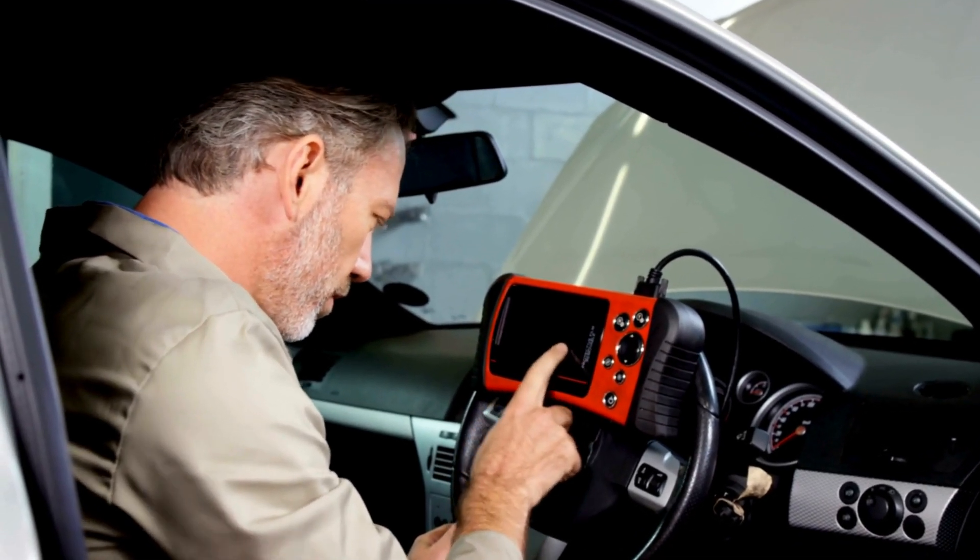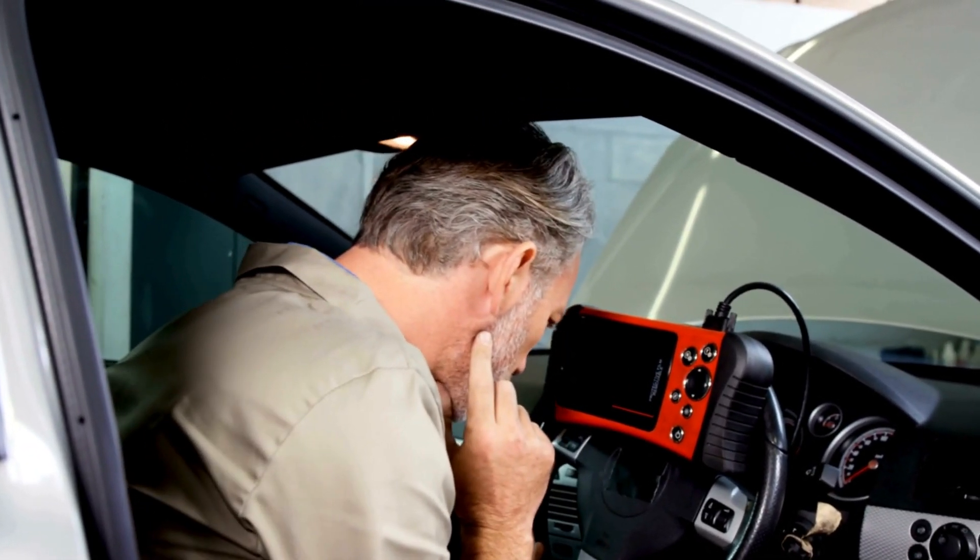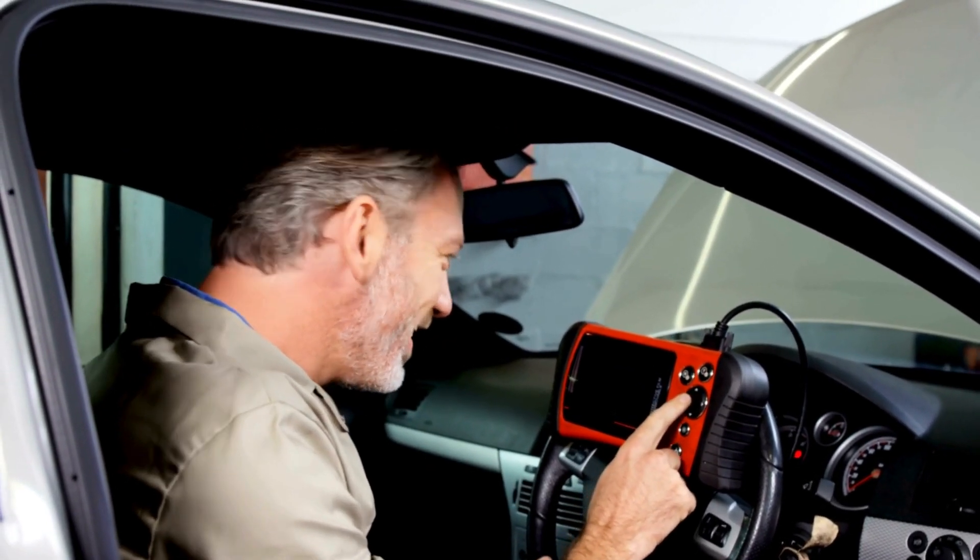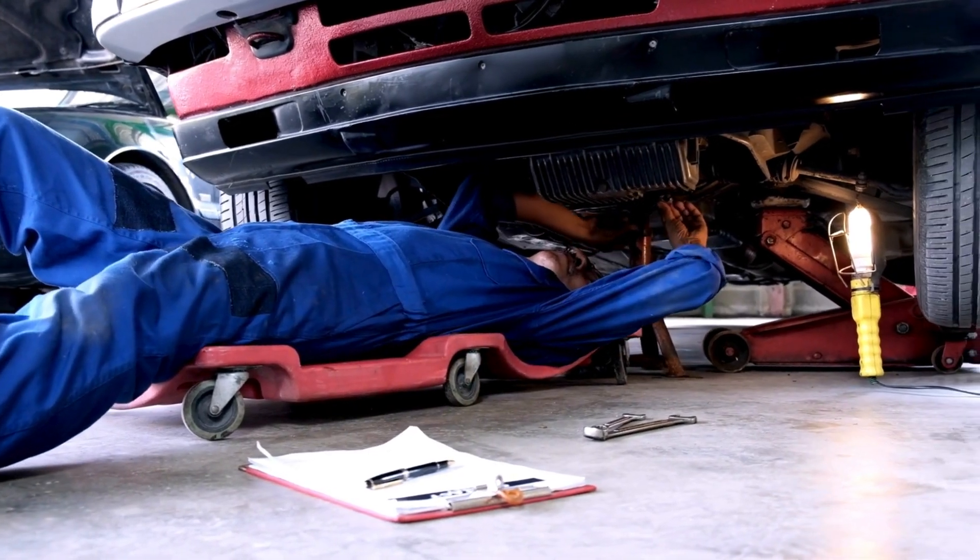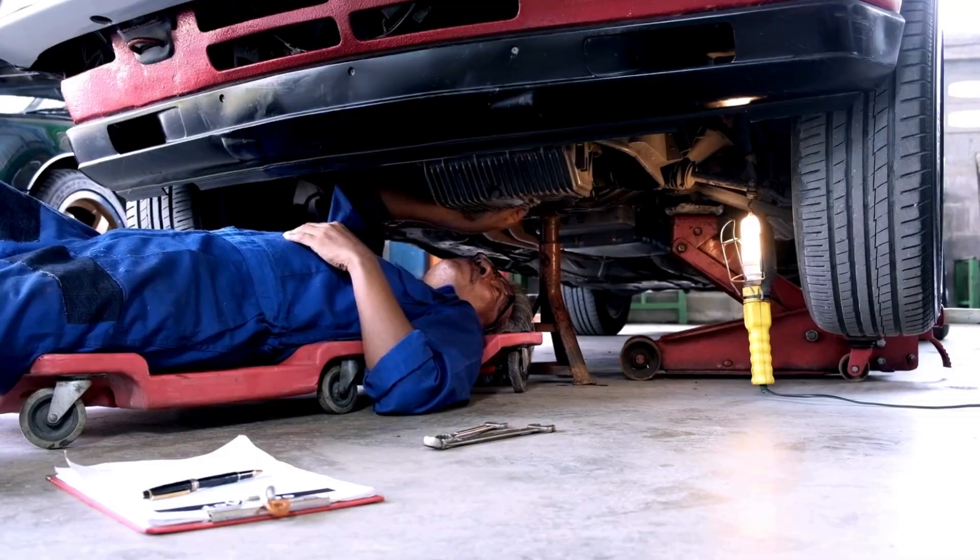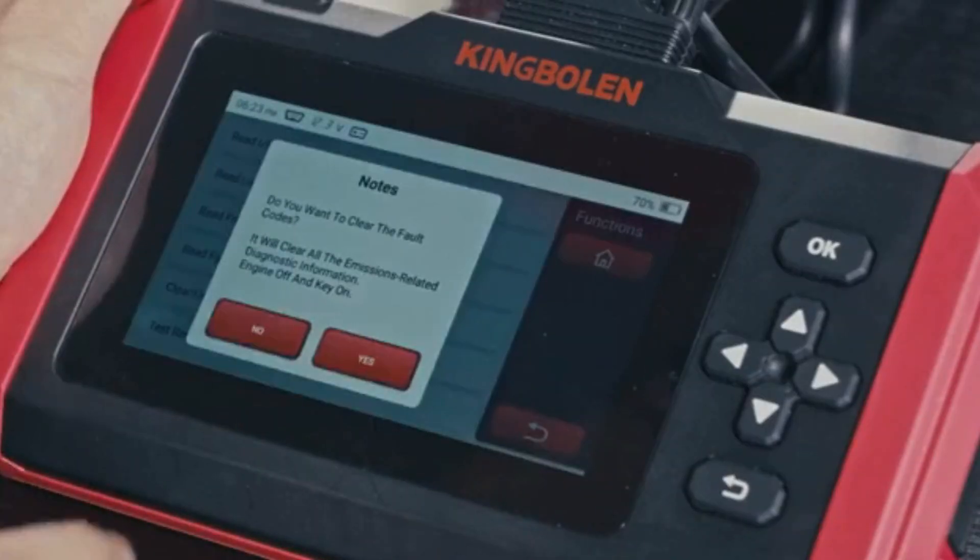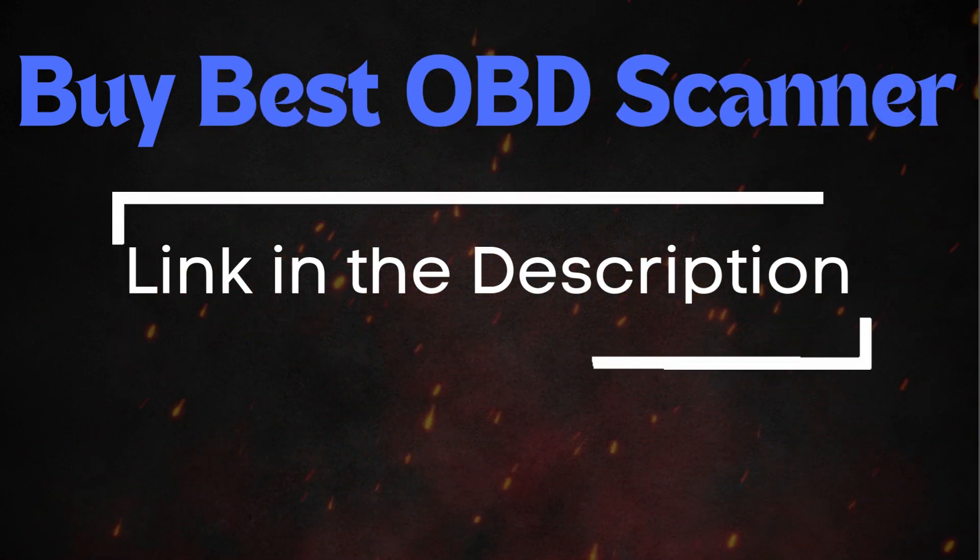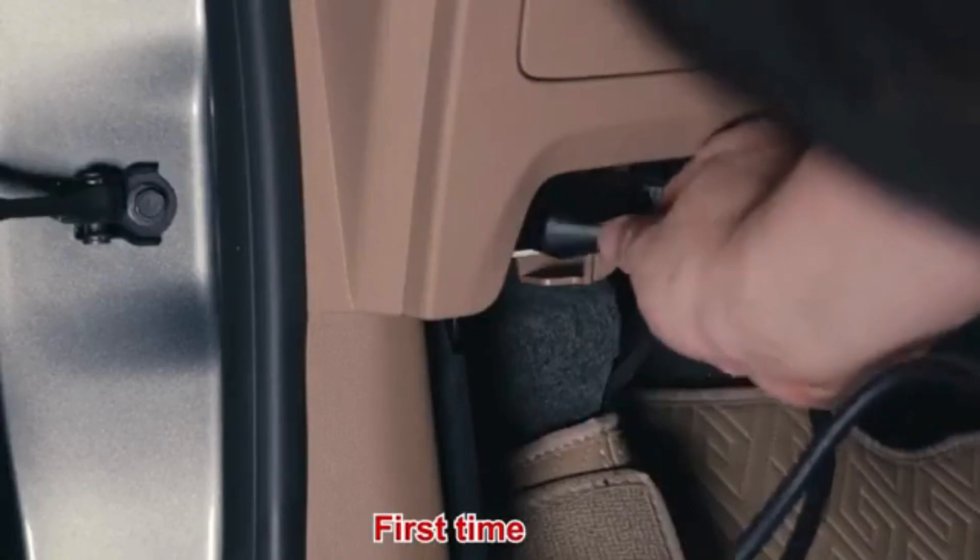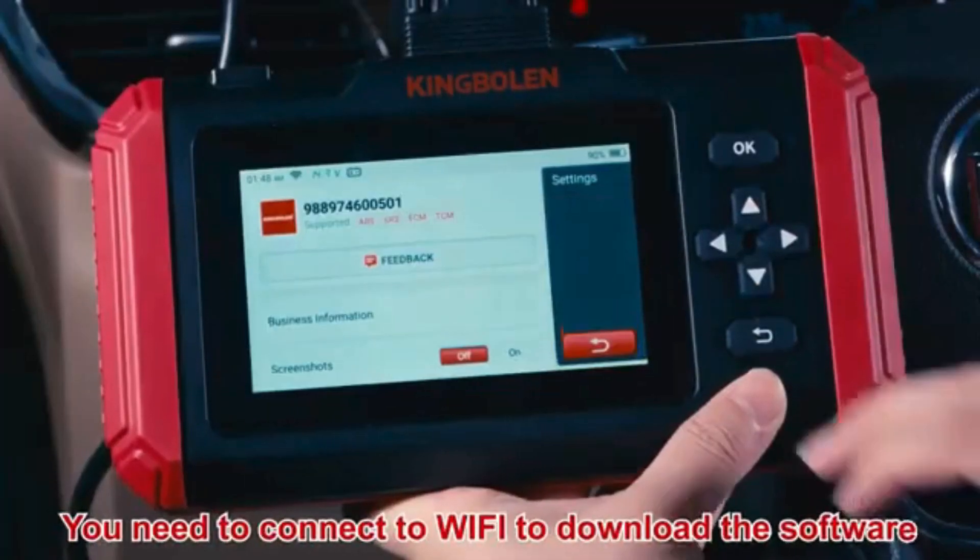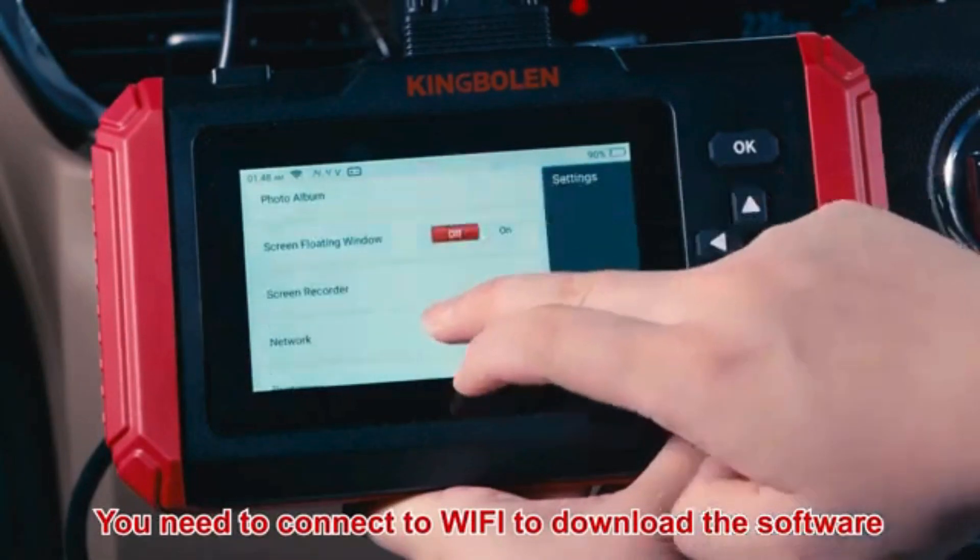Before diving into specific repairs, perform an OBD-II scanner reset to clear the codes. Sometimes, these codes pop up due to recent maintenance work and can resolve themselves after a reset. To reset the error codes, use an OBD-II scanner. You can find the best OBD-II scanner using the link in the description below. Simply connect the scanner to your vehicle, follow the instructions to clear the trouble codes, and see if the P0038 code reappears.